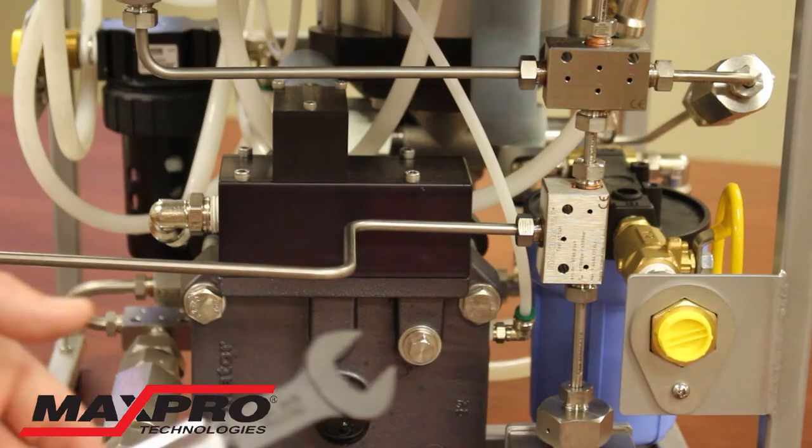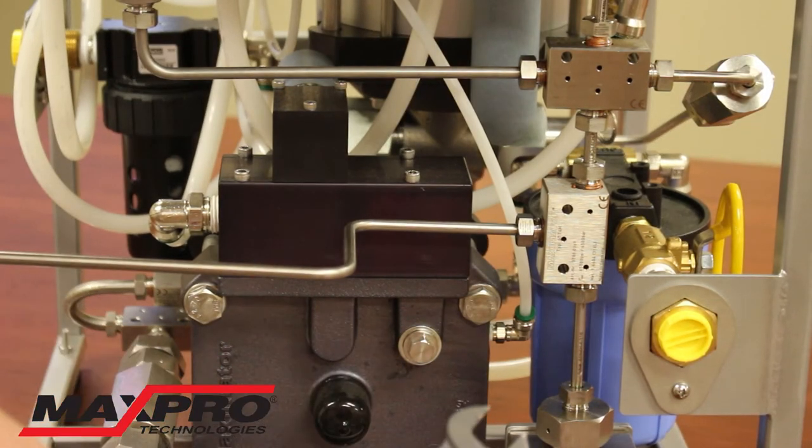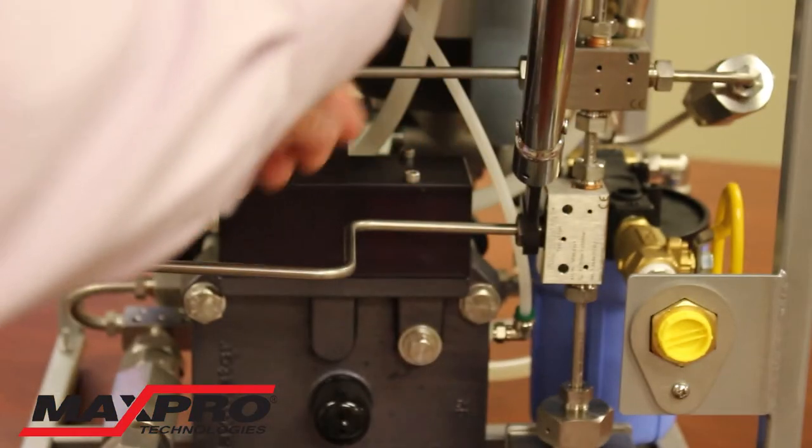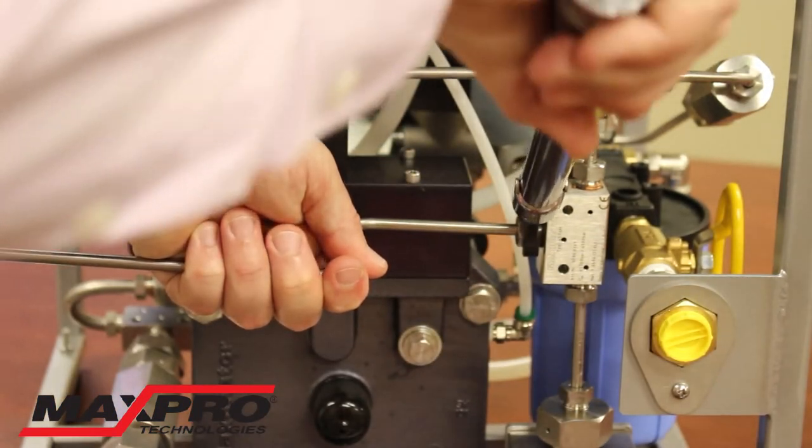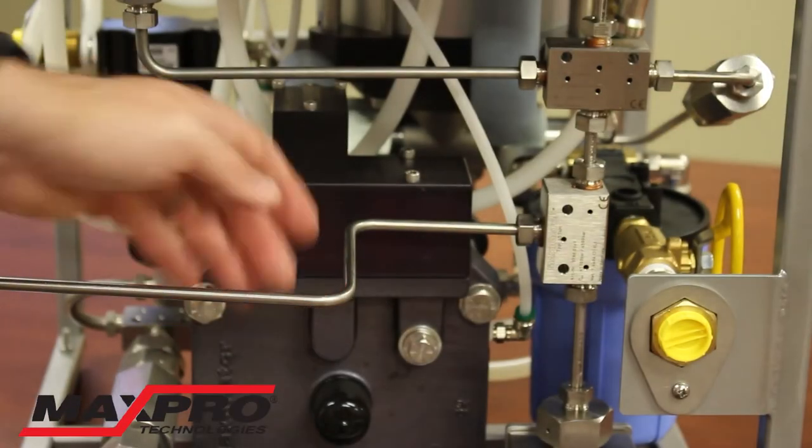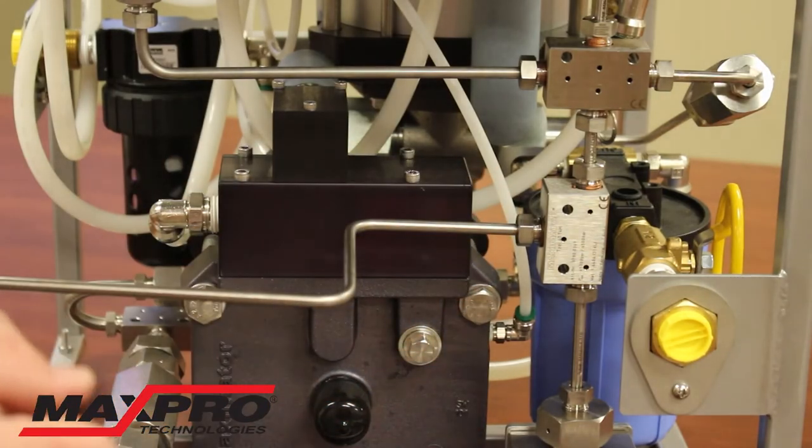For quarter-inch high pressure we want to go to 25 foot pounds and all this information is available on our website. And so that takes care of the first side of our nipple.